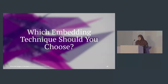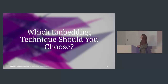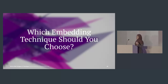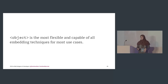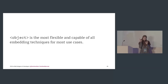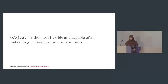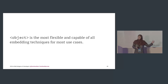Which embedding technique should you use? If you're not using CSS or SMIL, your options are limited. If you embed SVG using an image or background image, you can't animate it with JavaScript. My personal favorite is the object element — it's the most flexible and capable for most use cases. You get a default fallback mechanism between the opening and closing object tags, you can provide any fallback you want, and you can style and script it.